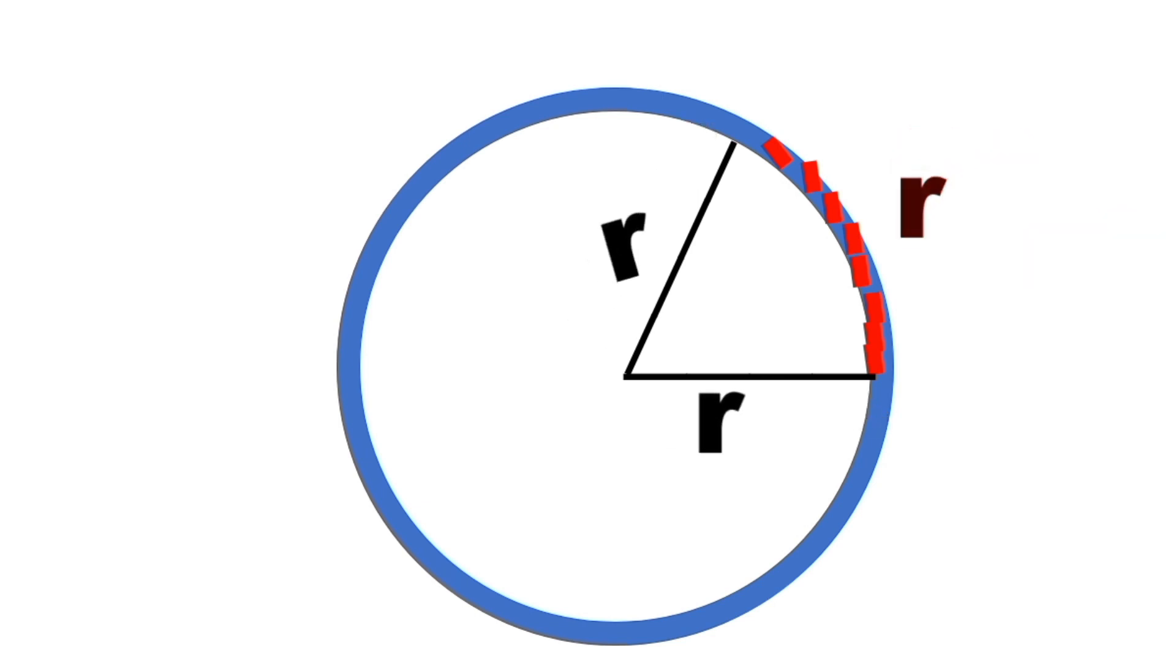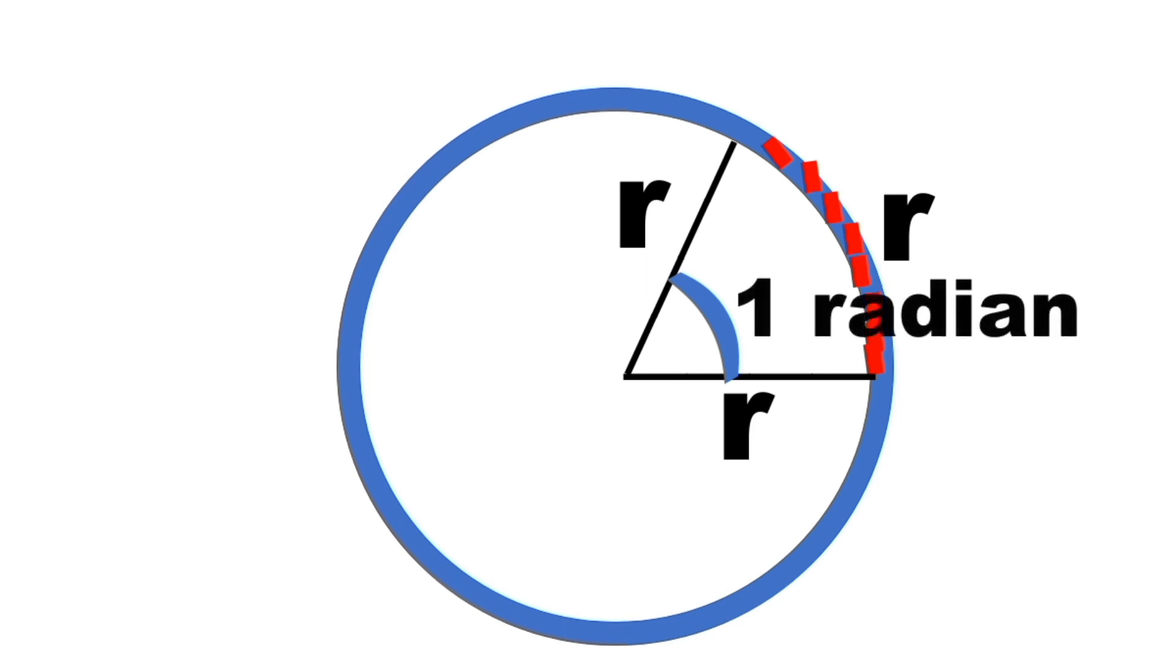If the radius and the arc length are equal, then the angle formed by the intersection of radius 1 and radius 2 is equal to one radian. Radian is abbreviated as rad.